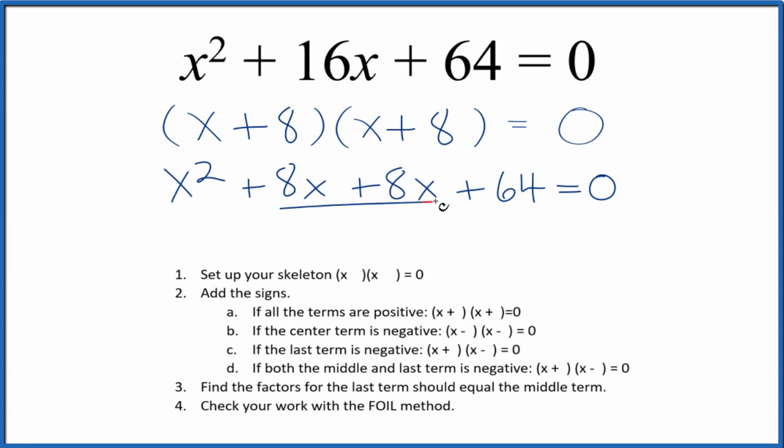Then we could combine these terms right here, and we end up with what we started with. So we've correctly factored x squared plus 16x plus 64.